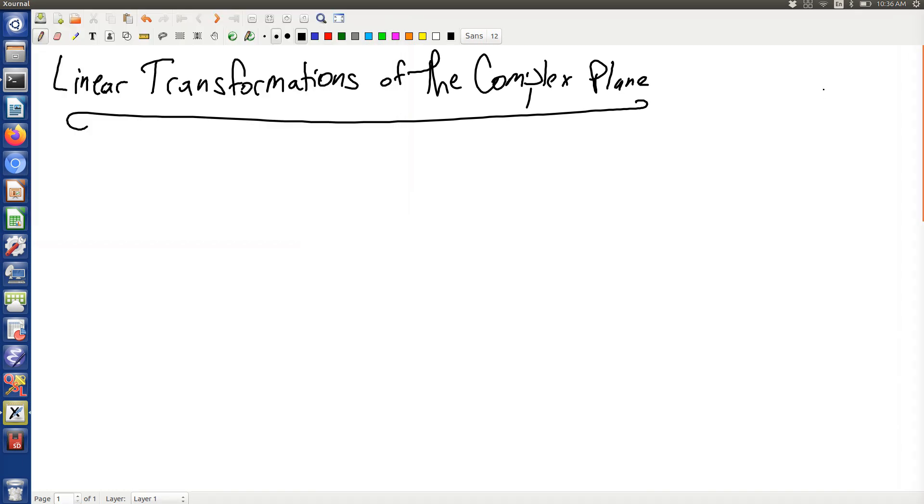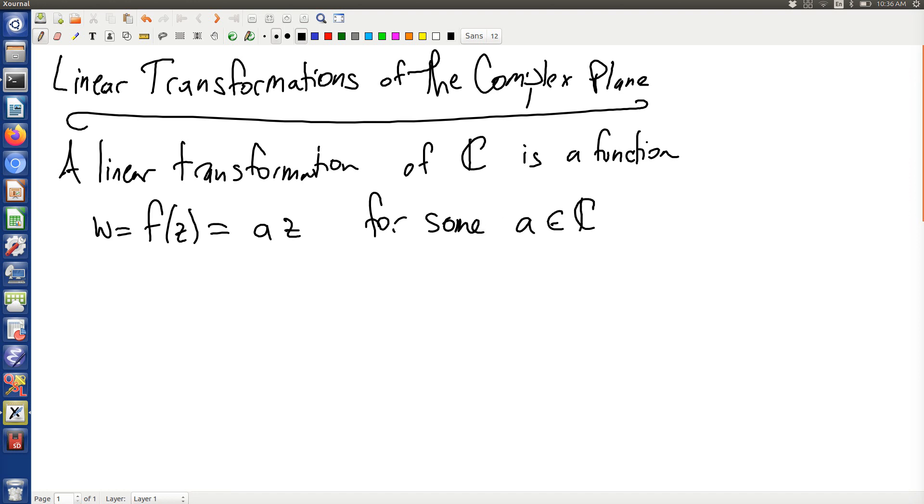This video describes linear transformations of the complex plane. A linear transformation of the complex plane is a function of the following form: it's just A times Z for some complex A.